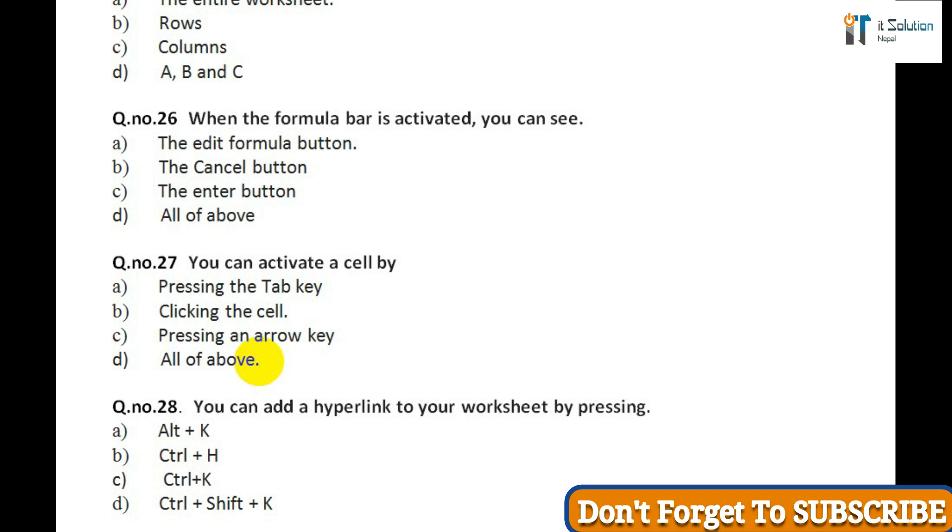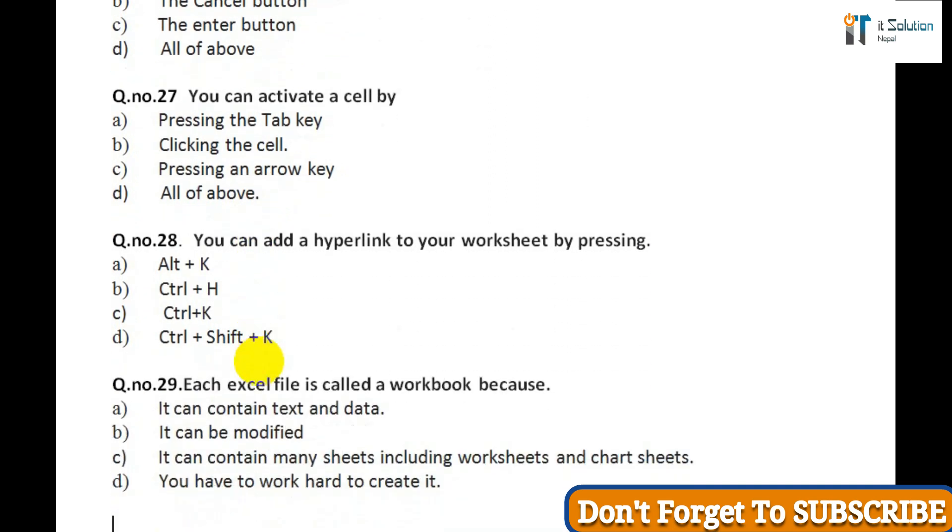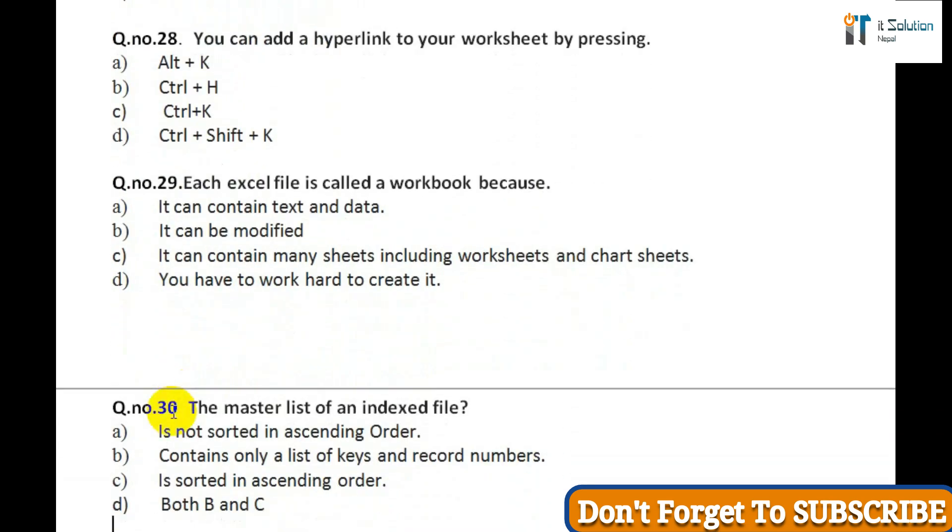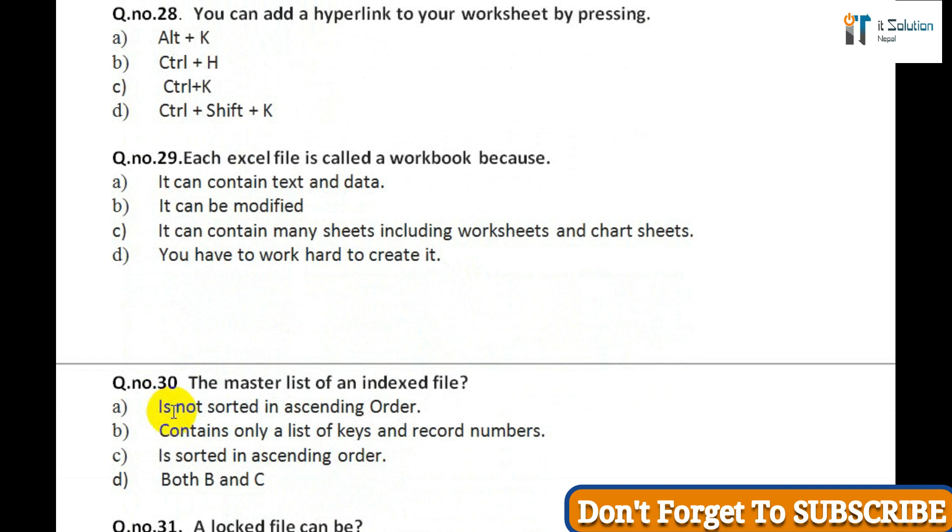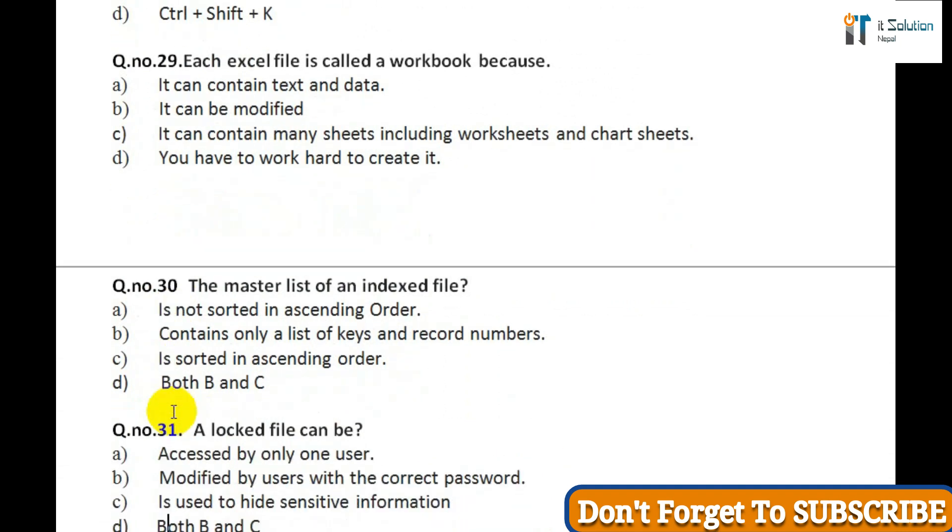Question twenty-three: Which of the following action removes the sheet from workbook? A) Select the sheet then choose format sheet height, B) Select the sheet then choose edit delete sheet, C) Both of above, D) None of above. Question twenty-four: To remove the content of selected cell you must issue direct command: A) Edit delete, B) Edit clear draw content, C) Edit clear all, D) Data delete. Question twenty-five: In a worksheet you can select: A) The entire worksheet, B) Row, C) Column, D) A, B, and C.